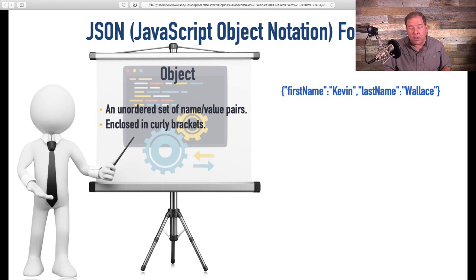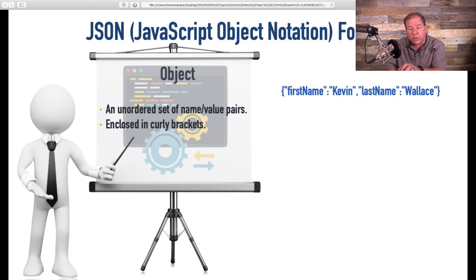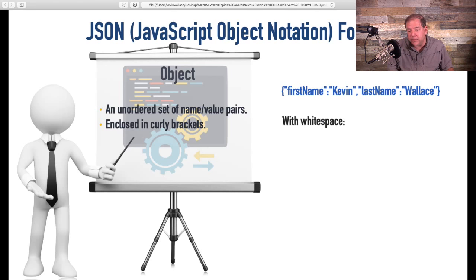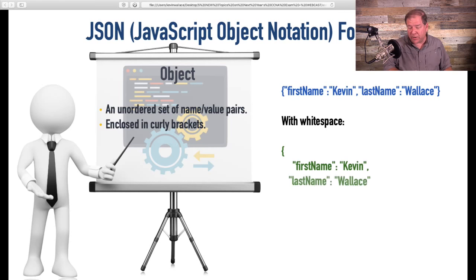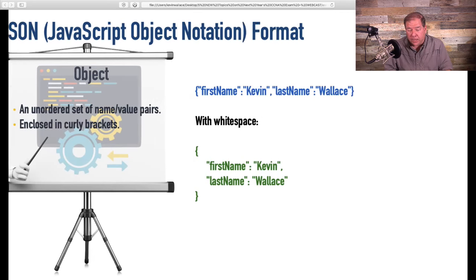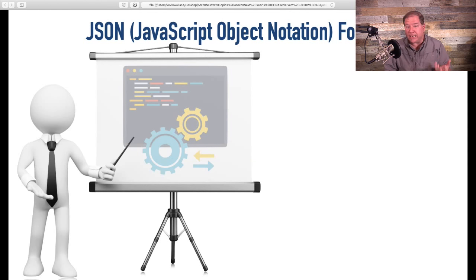Then we have another name-value pair separated with a comma: 'last name', colon, 'Wallace.' Then we close the curly brackets. This is simple with just a couple of pairs, but a large object could be unwieldy, so you typically want white space — the curly brackets on their own lines, with each name-value pair on an individual line, still separated with a comma. The second type of data structure is an array — an ordered set of comma-separated values in straight brackets instead of curly brackets.